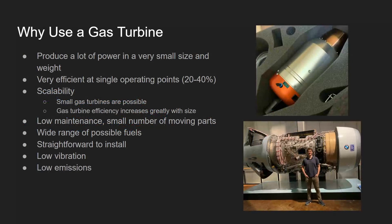This continuously burning system means we are able to produce a lot of power in a very small size and weight. The gas turbine is also very efficient at single operating points or within a narrow operating range. For a smaller gas turbine you may expect around 20 percent efficiency, but as turbines grow larger, efficiency increases — up to 40, 41, or even 42 percent for the largest power generation gas turbines today.